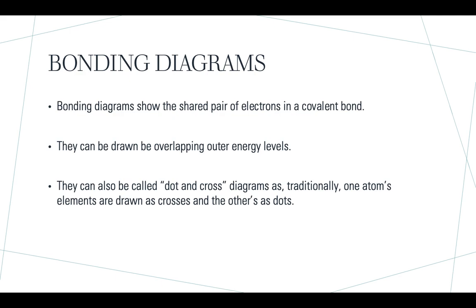Bonding diagrams show the pair of electrons in a covalent bond and they can be drawn by overlapping outer energy levels. They can also be called dot and cross diagrams, as usually one atom's electrons are drawn as crosses and the other atom's electrons are drawn as dots.